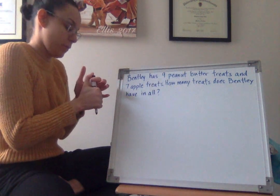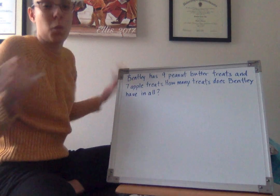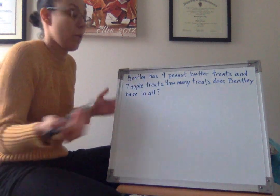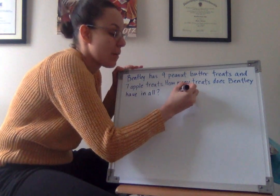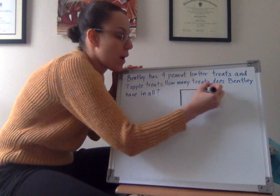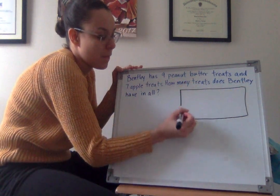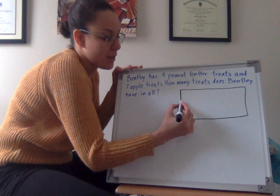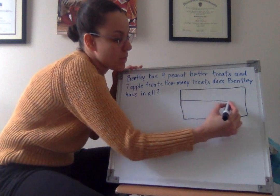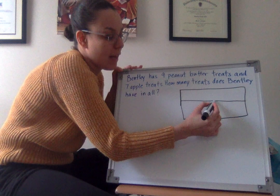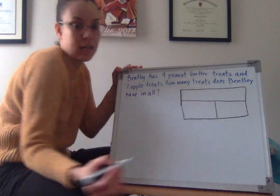So first, I want to draw a tape diagram to figure out what parts of the story do we know, and what do we need to figure out. To draw my tape diagram, I'm going to draw one big rectangle. I'm going to split it in half across, and then split it in half again, going down, kind of like a T.